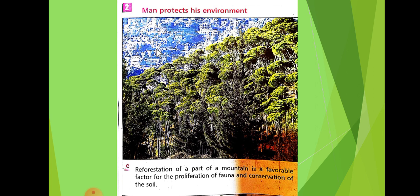In this lecture, we are going to take part 2: how man can protect his environment from things like over-exploitation, cutting down trees, pollutants, and sewage water. All of these are man's activities — how man can treat this problem and protect his environment.